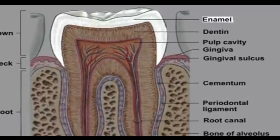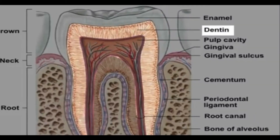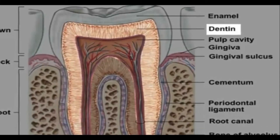The enamel is the hardest substance in the human body, but it is brittle, subjected to injury, and can also be worn down by abrasion or acidic foods. The layer located beneath the enamel is called the dentin. Dentin is a bone-like calcified connective tissue with an organic matrix of collagenous proteins. It is not as hard as enamel, and although it is a protective layer, it is susceptible to decay at a greater rate than enamel.